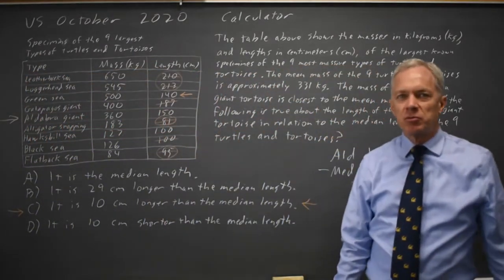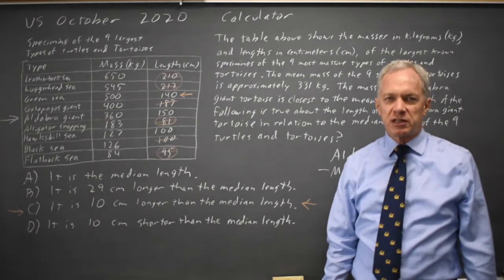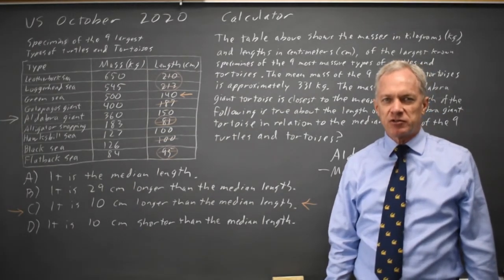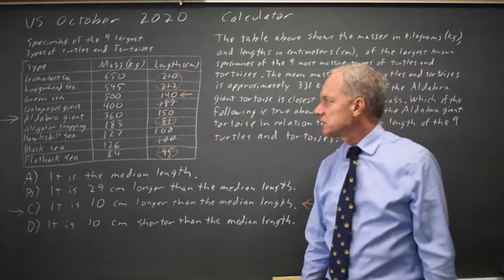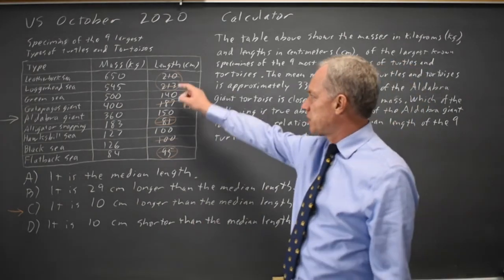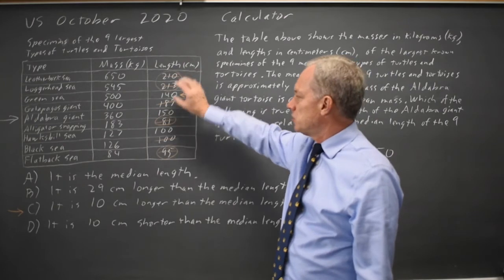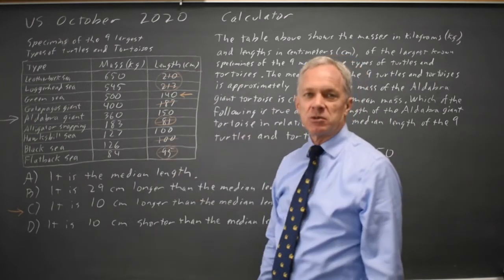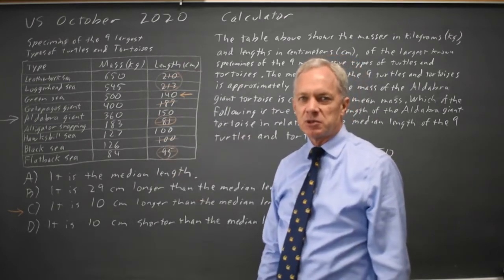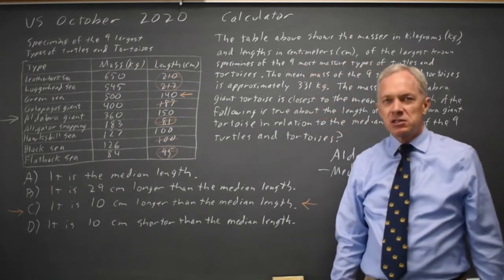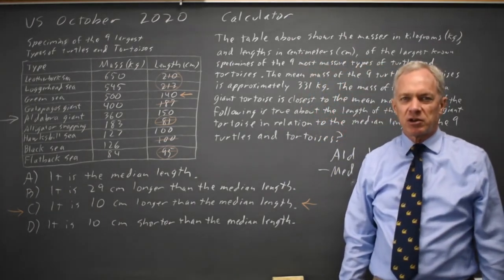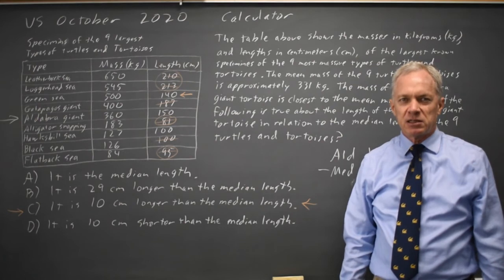The whole point of this question is first to find the median from a list of nine numbers, where the median is the middle number listed largest to smallest. I always find it easy to cross out the two largest and the two smallest and continue until I can see which one is the middle number — and mainly just to read this long paragraph and large table of data that has a lot of extra information.